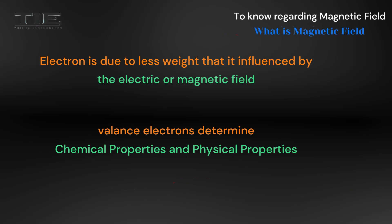We can conclude that an electron, due to its less weight, is influenced by the electric or magnetic field. Valence electrons determine chemical properties and physical properties.